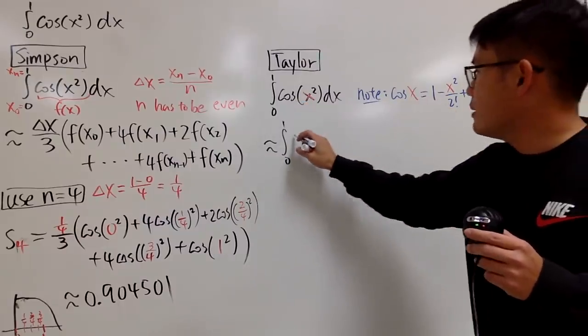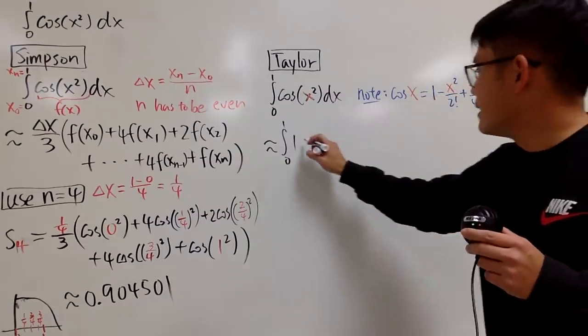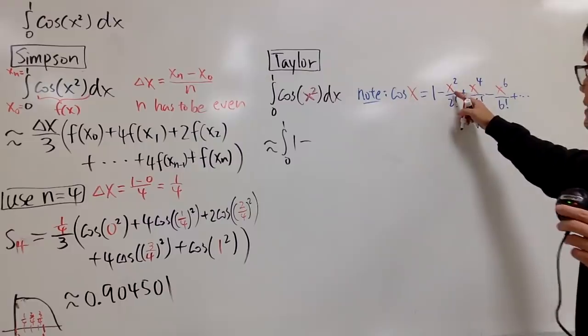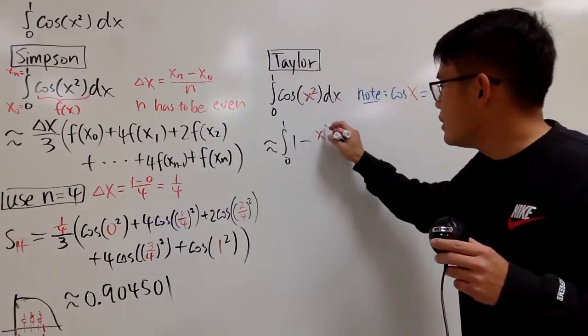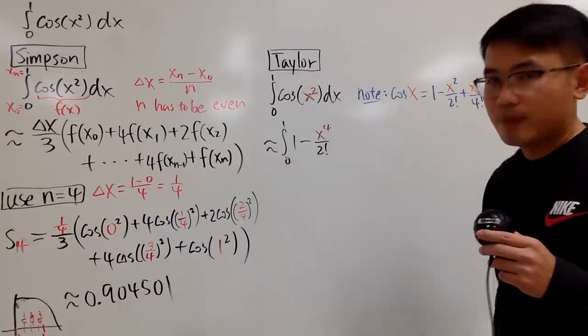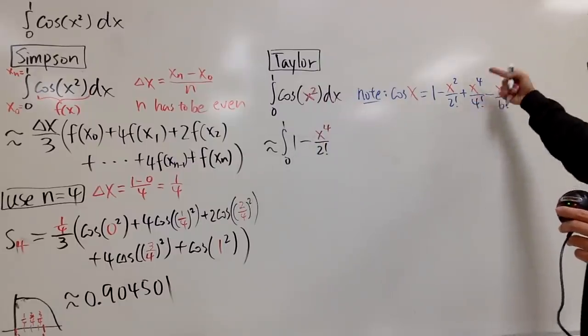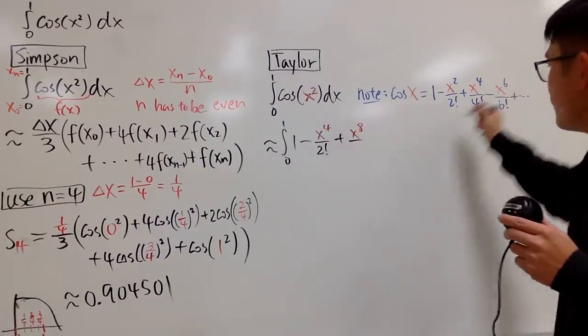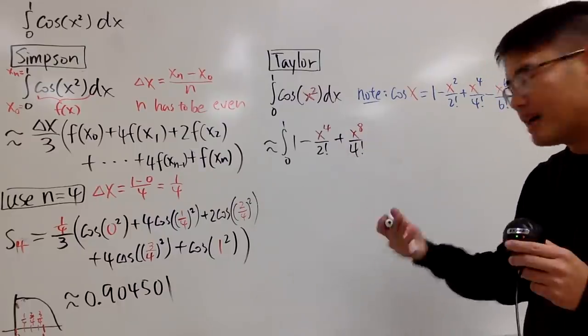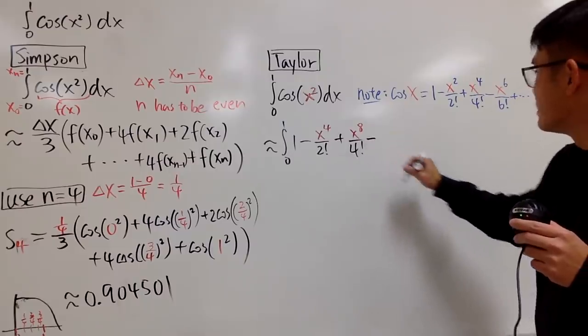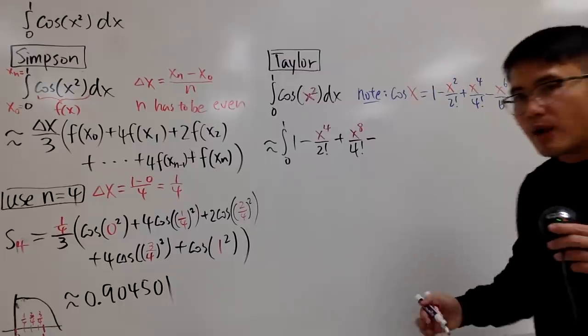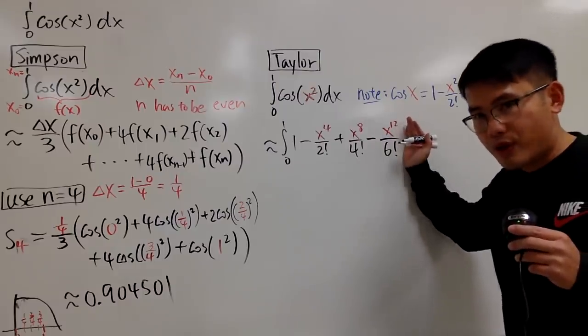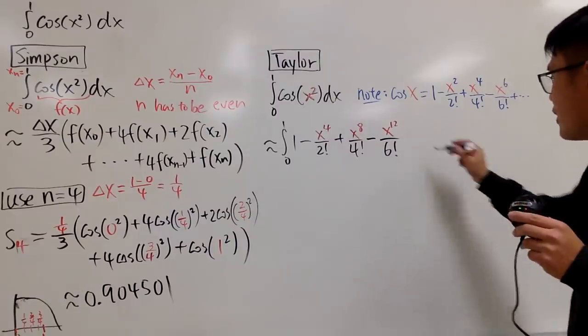The first term is still 1, because when you plug in there's no x. Next, I will have minus, and then I have x squared, I plug in x squared into this x and square that, so I get x to the fourth power divided by 2 factorial. Next, I put x squared and raise that to the fourth power, and you multiply the powers, so we get x to the eighth power divided by 4 factorial. Lastly, this is minus, then you put x squared and raise to the sixth power, you get x to the twelfth power over 6 factorial. Then we're going to stop. That's why I put an approximation, because I'm not going to keep going forever. So I put on dx.